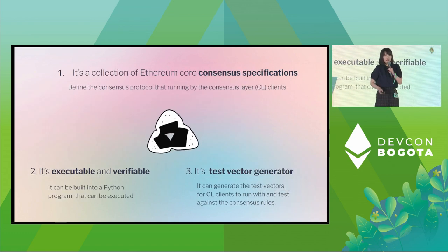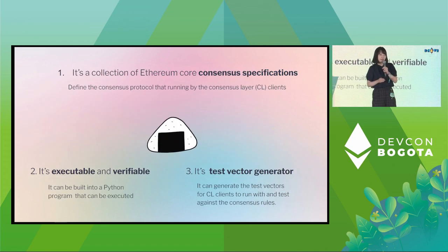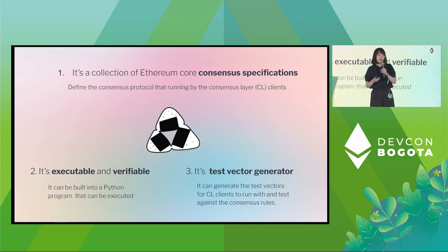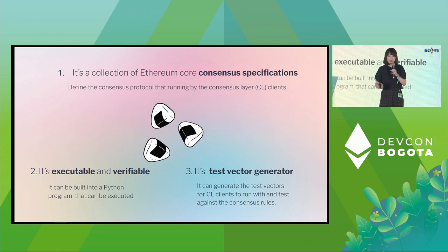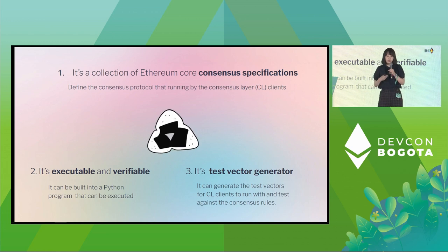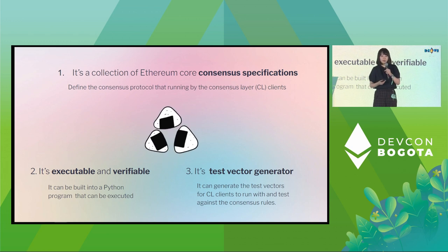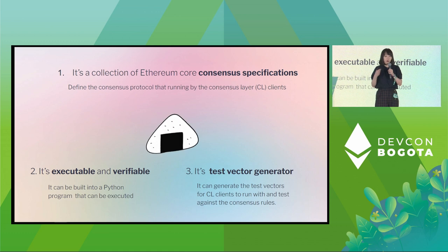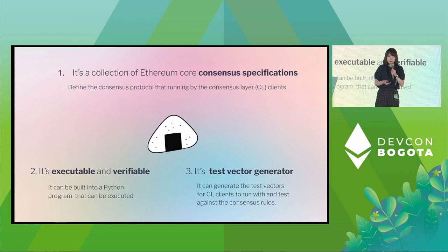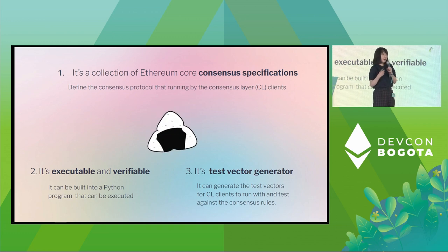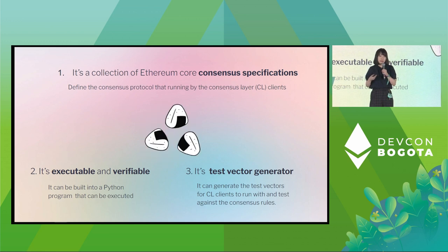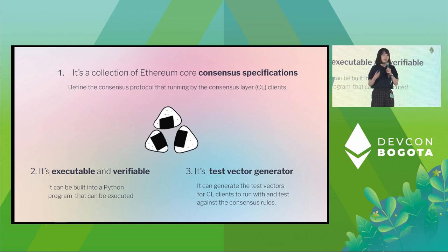This project has three main purposes. First, it is the center of the Ethereum core consensus spec. Second, it is also an executable, verifiable Python program that you can use to run the consensus logic with. Third, it is our test vector generator for the CL clients — the consensus layer clients — to test their implementations with.